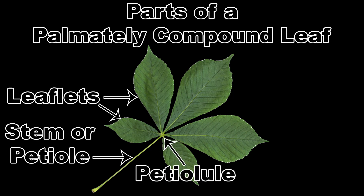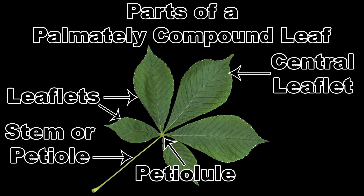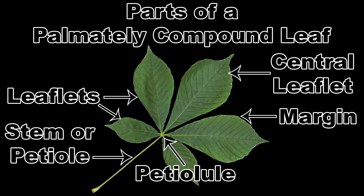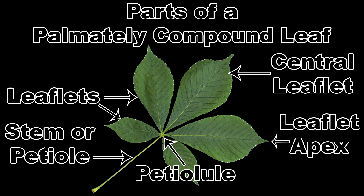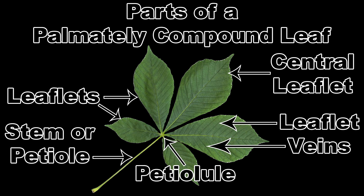The stems that connect the leaflets to the petiole are known as petioleules, and the middle leaflet is called the central leaflet. The parts of each leaflet are like those of a simple leaf: the blade, the margin, a midrib that runs from the leaflet base to the tip or apex, with the leaflet veins coming off of the midrib.